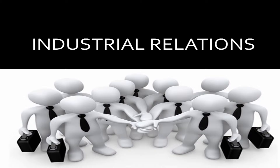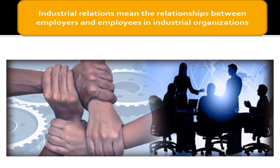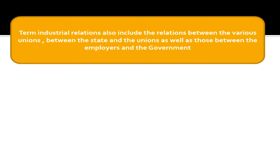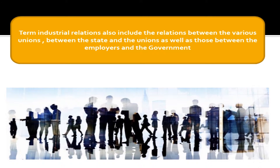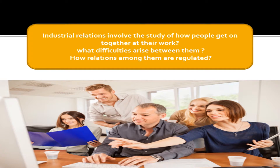Hi Learners, in this video we will be learning about Industrial Relations. Industrial Relations means the relationship between employers and employees in industrial organizations. The term also includes the relation between various unions, between the state and the unions, as well as those between the employers and the government. Relations of all these parties associated in industry may be referred to as Industrial Relations. It involves the study of how people get on together at their work, what difficulties arise between them, how relations among them are regulated, and which organizations are established to protect different interests.